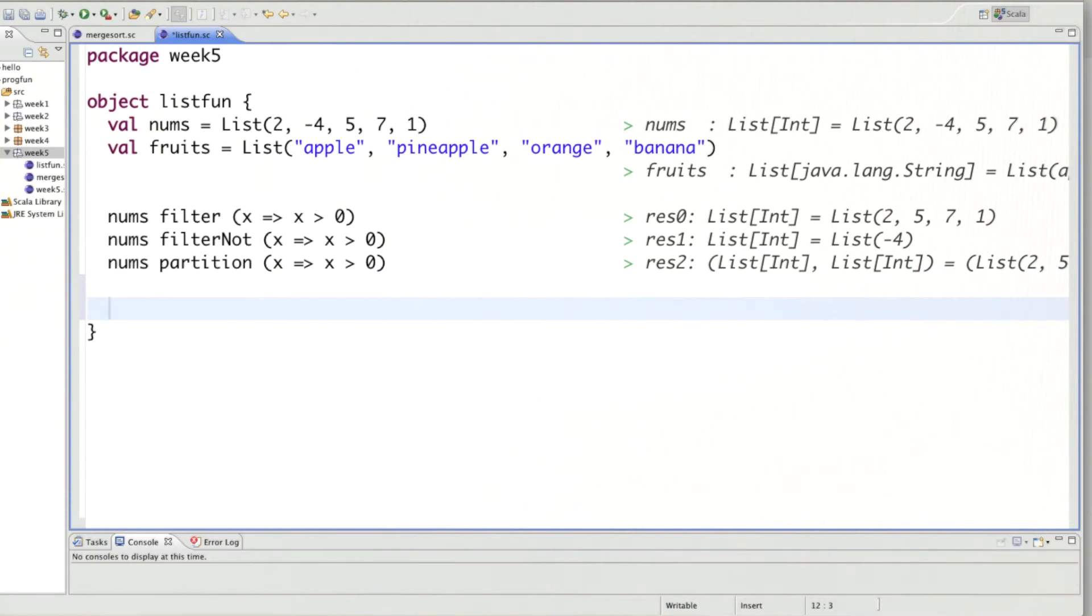The next two functions are a bit different in that they look at a prefix and a suffix of a list. So what I can do here is I can say nums take while X, X greater than zero. So what that gives me is the longest prefix of the list such that the predicate is true. So here I would say, okay, two is greater than zero, but then at minus four I would stop, because minus four is not greater than zero. So any further elements will not take part in take while. That's the main difference between take while and filter. Filter will always select all elements in the list that satisfy the criterion, whereas take while will only take the longest prefix of the list.